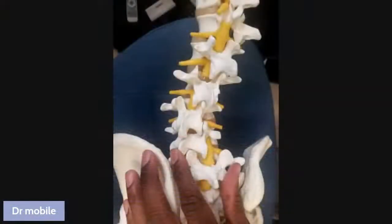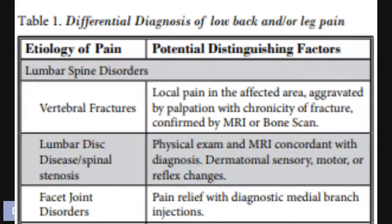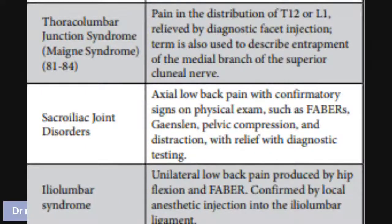If it's facet joint pain, you can get relief with a diagnostic medial branch block, which we discuss in various other videos on our YouTube channel. If you look at the thoracolumbar junction, you can have pain at T12 or L1. You can also assess whether it's SI joint problems with low back pain by performing a Faber test, a Gaenslen test, pelvic compression, or evaluating ileal lumbar syndrome where pain is produced by hip flexion and Faber.